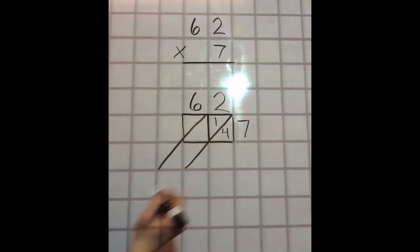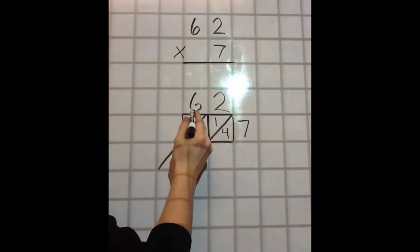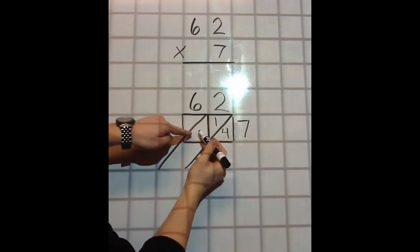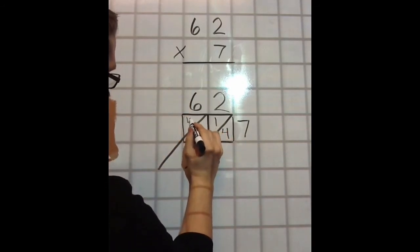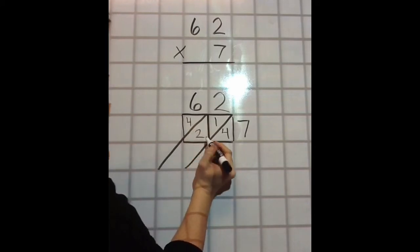2 times 7 would meet in this box, and that's 14. So, 1 and 4 for 14. Here, it's 6 times 7 in this box, it's where they meet. So, that's 42, 4 in the tens place, 2 in the ones.